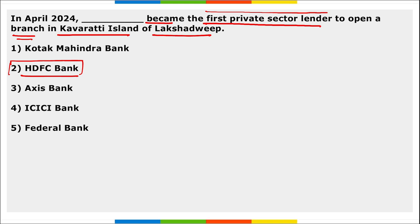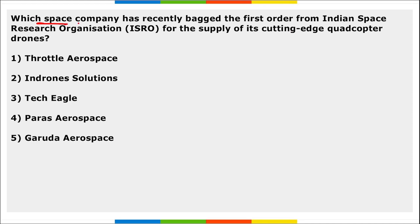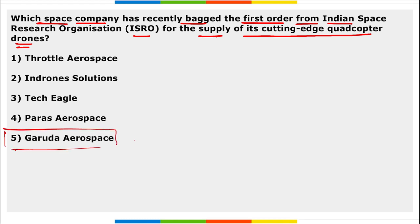HDFC Bank seeks to serve customers wherever they are and looks forward to serving the financial needs of individuals, families, and businesses in Lakshadweep. Next: which space company has recently bagged the first order from ISRO for the supply of cutting-edge quadcopter drones? It is Garuda Aerospace. Garuda Aerospace recently bagged the first order from ISRO for the supply of their cutting-edge quadcopter drones.